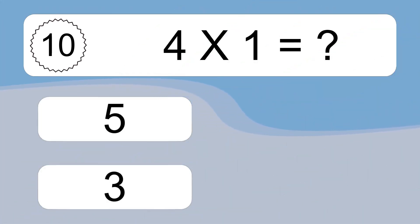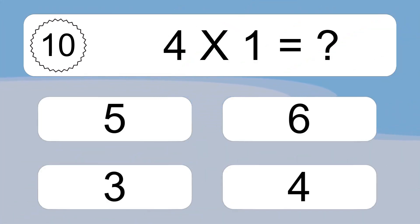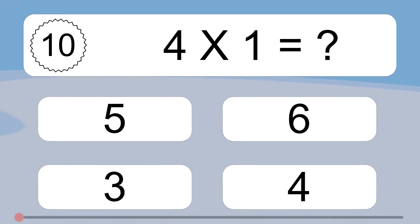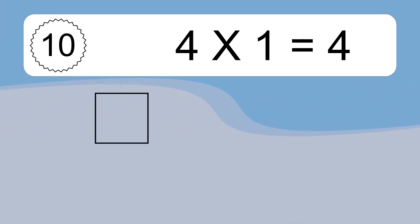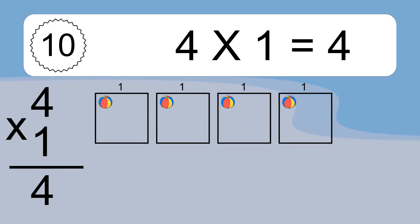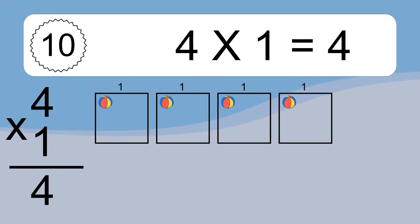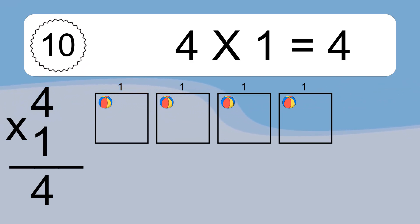Four times one equals four. We have four boxes, and each box has one colorful ball inside. If you count all the balls in all the boxes together, you will have four times one ball. This equals four balls.